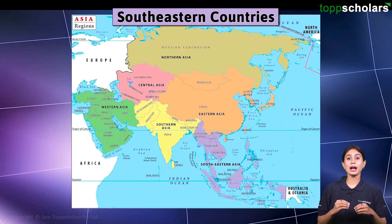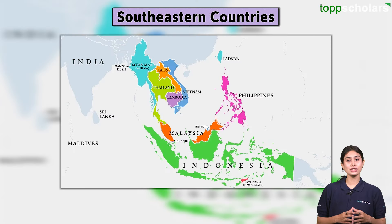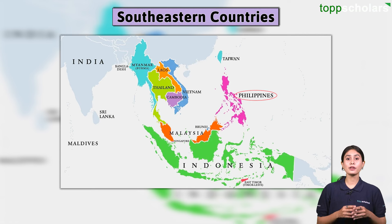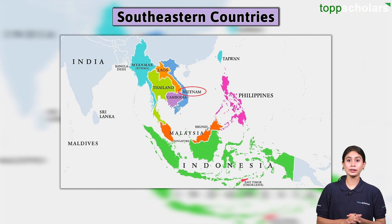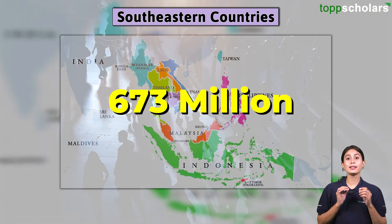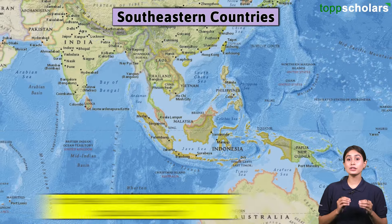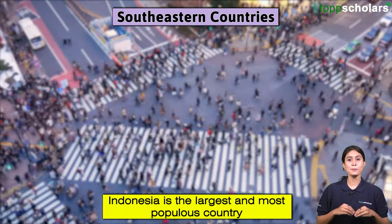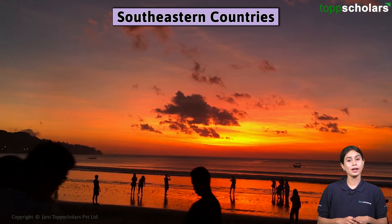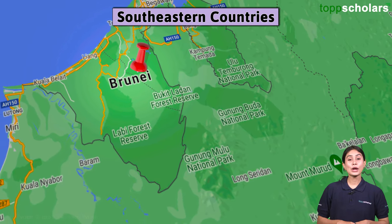And lastly, South Eastern Asia comprises 11 countries: Brunei, Cambodia, Indonesia, Laos, Malaysia, Myanmar, the Philippines, Singapore, Thailand, Timor-Leste, and Vietnam. With an estimated population of 673 million, the region is primarily based on islands. Indonesia is the largest and most populous country, while the least populous country in Southeast Asia is the small Sultanate of Brunei.